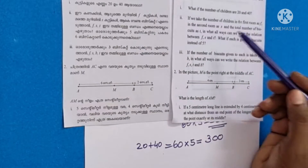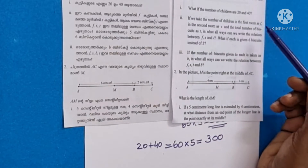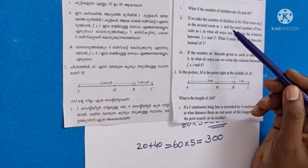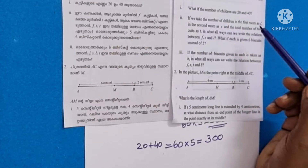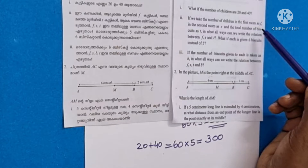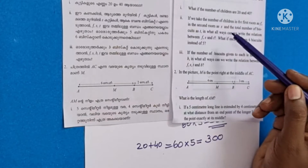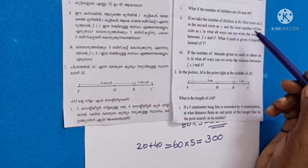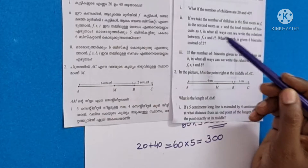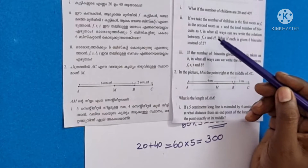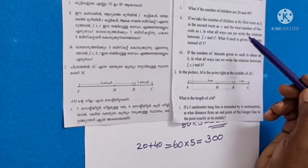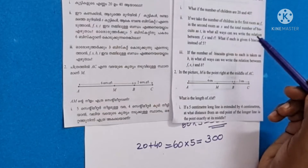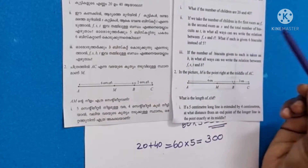If we take the number of children in the first room as F, in the second room as S, and the total number of biscuits as T, in what ways can we write the relation between F, S, and T? What if each is given 6 biscuits instead of 5?